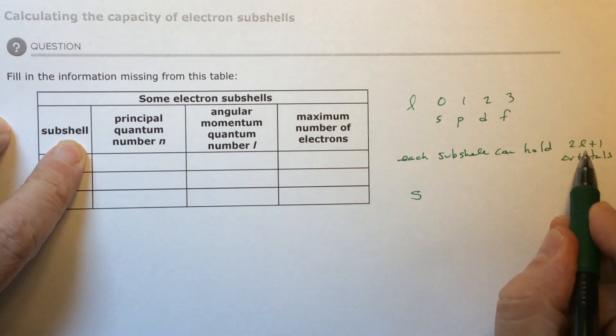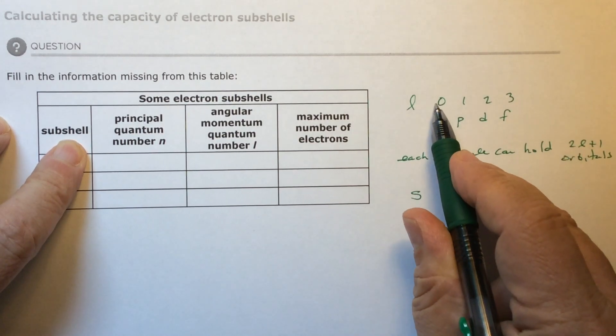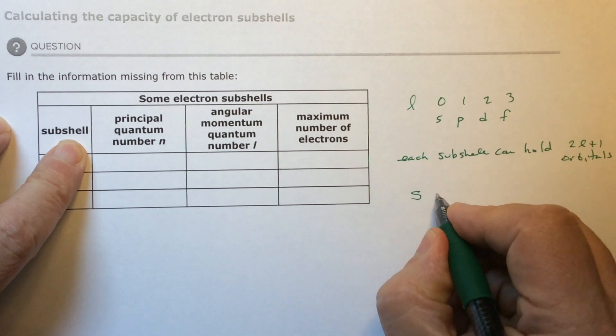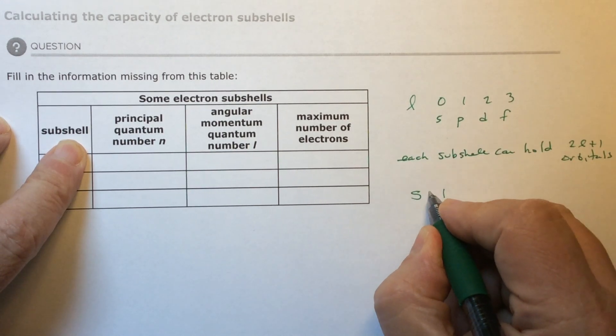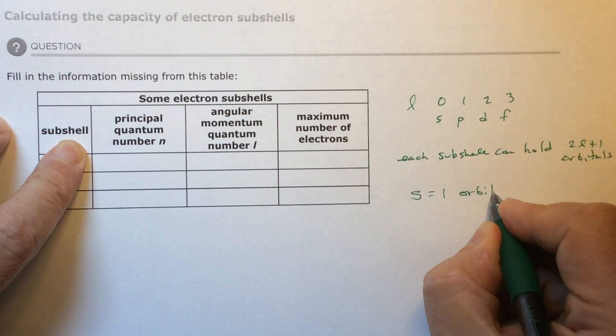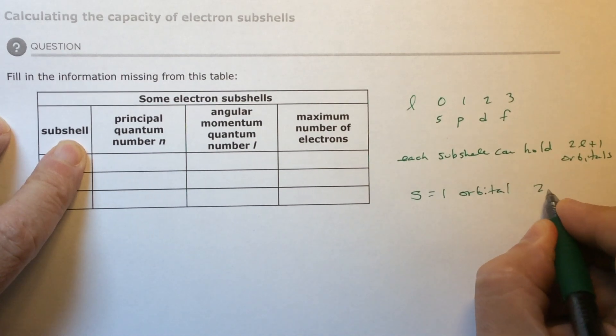The S would be two times zero plus one, so this would be one, one orbital, which is two electrons.